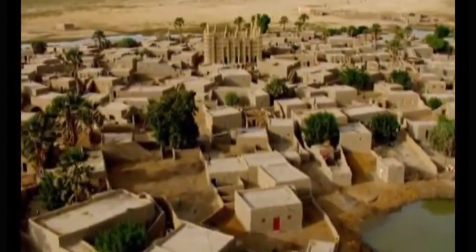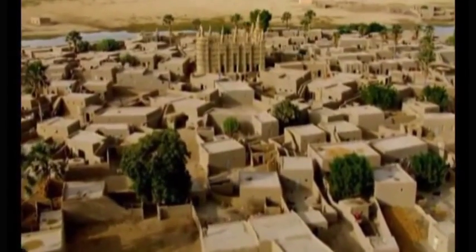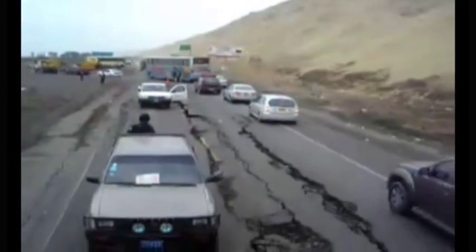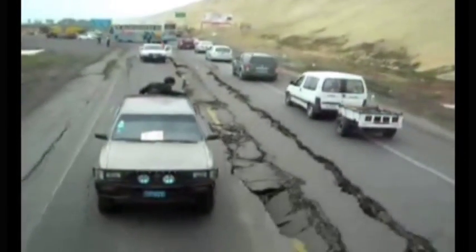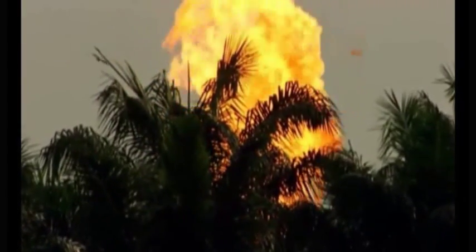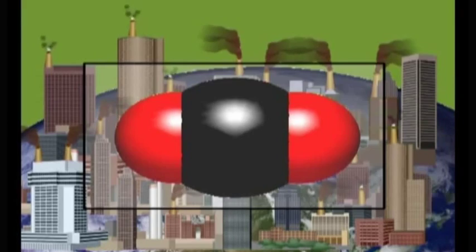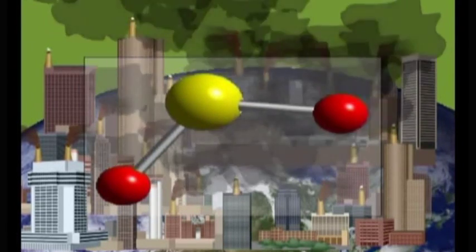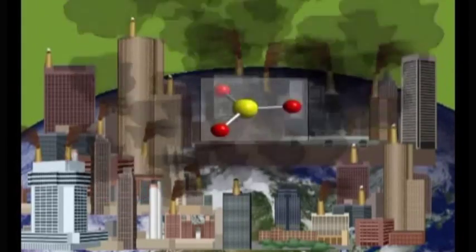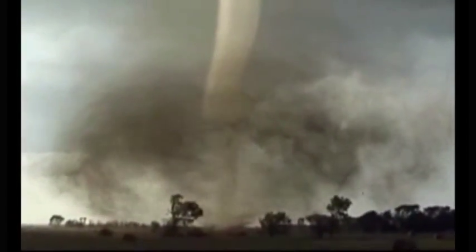An eruption of volcanoes, earthquakes, natural forest fires, and natural decay of dead bodies of both plants and animals add ash, dust, carbon dioxide and sulphur-containing gases such as hydrogen sulphide, sulphur dioxide and sulphur trioxide to the atmosphere, especially to air. Similarly, dust storms also add large quantities of dust to the atmosphere.